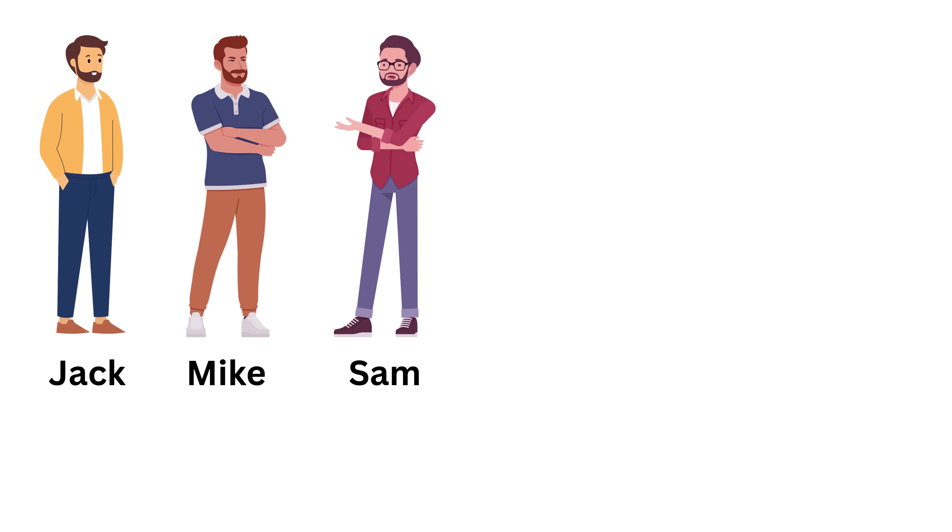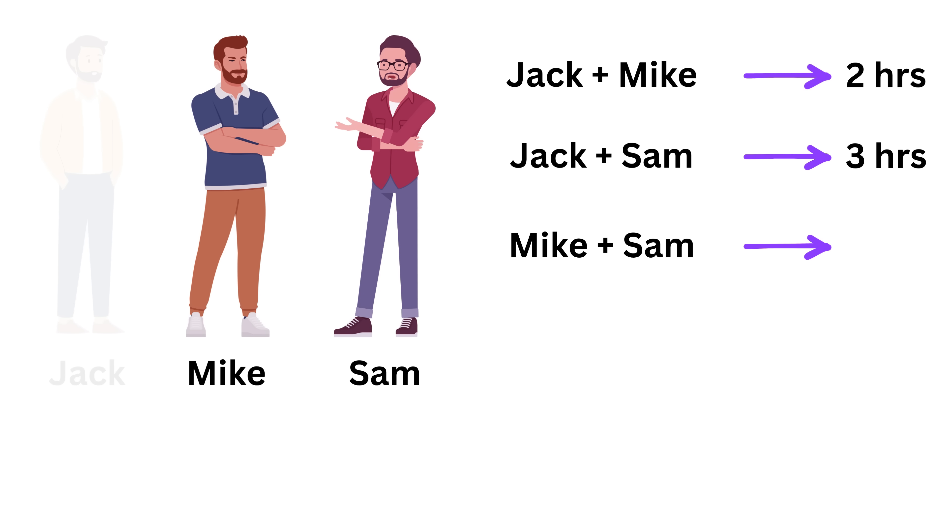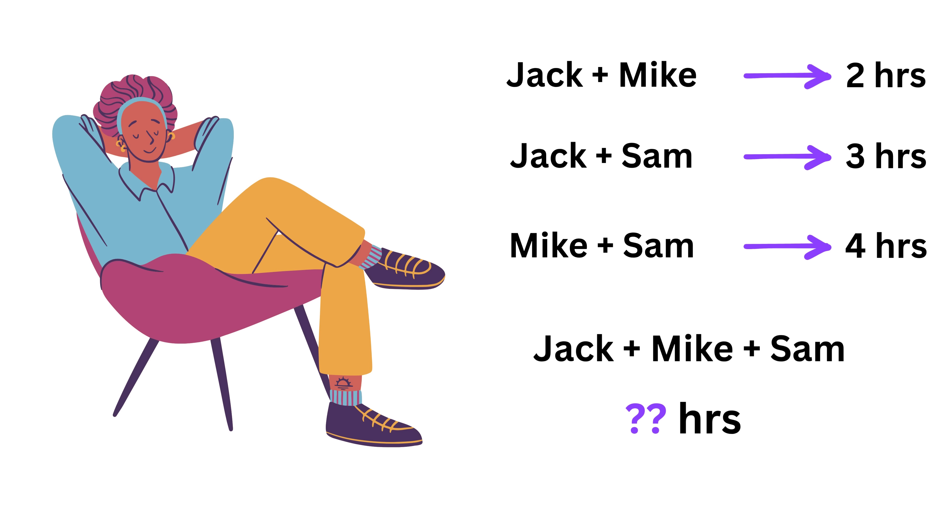The problem says that Jack and Mike together can finish the job in two hours. Jack and Sam together can finish it in three hours. And Mike and Sam together can finish it in four hours. Now the question asks, if all three of them work together, how long will it take for them to finish the same job?